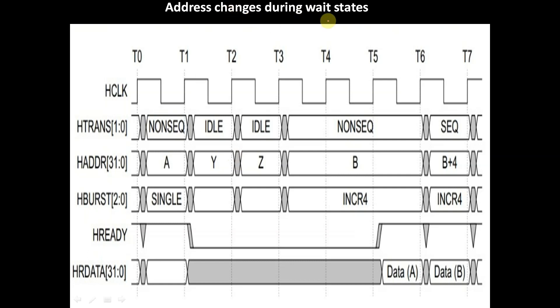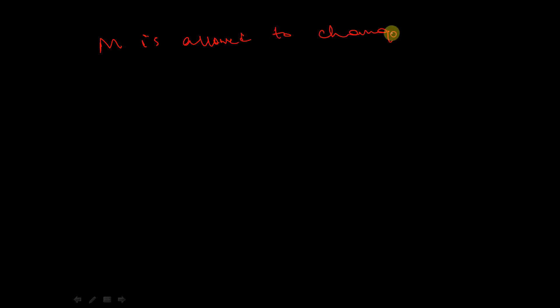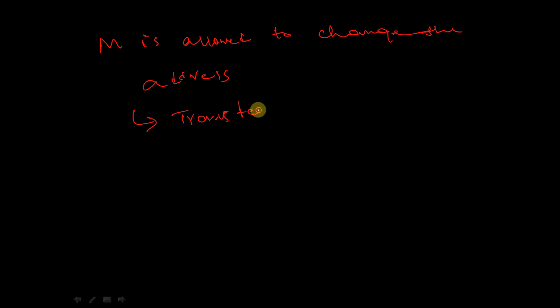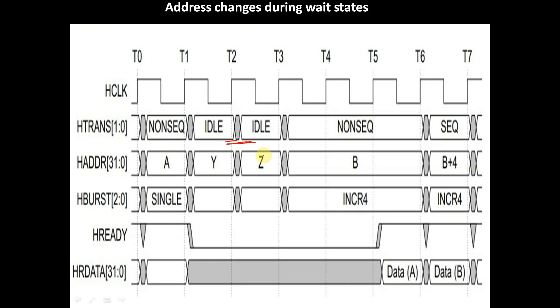So let's see the first scenario. In this case, the address change during the wait state — the master is allowed to change the address only in the case of an IDLE transfer. So the master is allowed to change the address when the transfer type is IDLE. In this example, we can see when HTRANS is equal to zero, then the transfer type is IDLE.